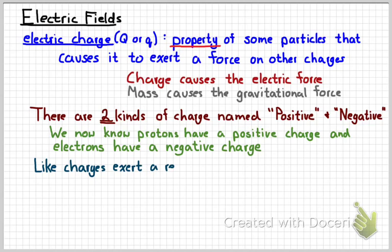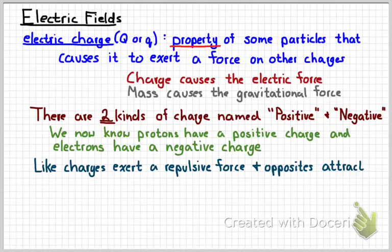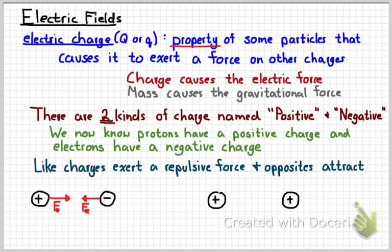We know that like charges will exert a repulsive force on each other. That means that they'll push apart. And opposite charges will attract each other, meaning they'll pull together. If you have two oppositely charged particles, they'll exert an attractive electric force. Whereas two like charged particles will exert a repellent force. Two positive charges will repel, two negative charges will repel.